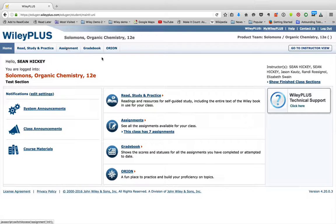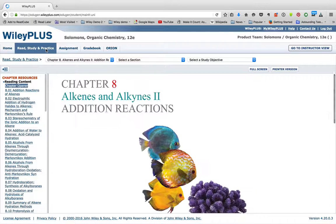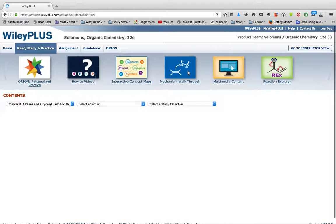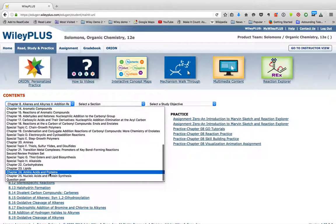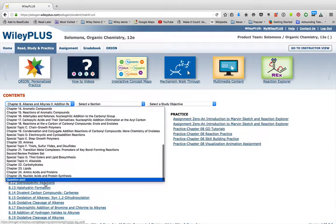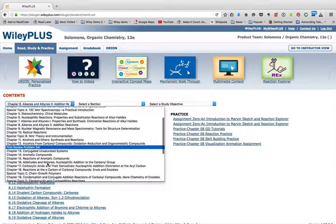We'll look at Assignment and Orion in other videos. If you click on Read, Study, and Practice, this is where you have all the textbook resources available to you. You have the full textbook available, all the chapters, including special topics, question pools, quizzes, first review problem sets, and so forth.